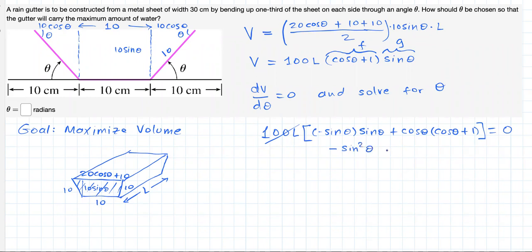We get here, then, negative sine squared of theta, plus cosine squared of theta here, plus cosine of theta equals 0.